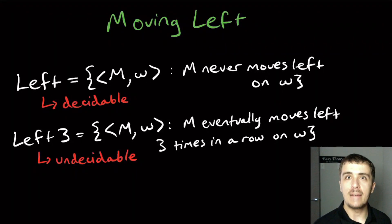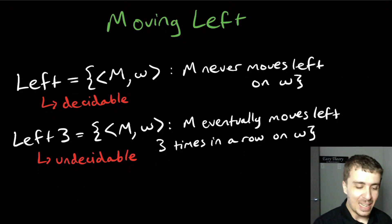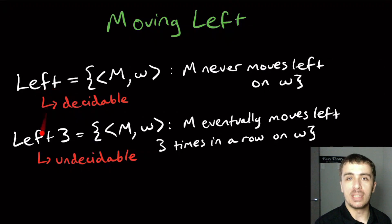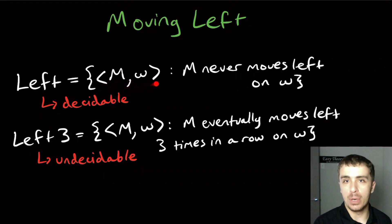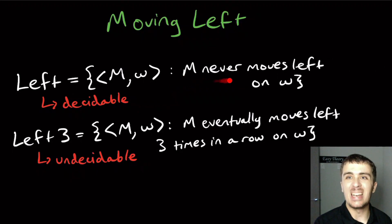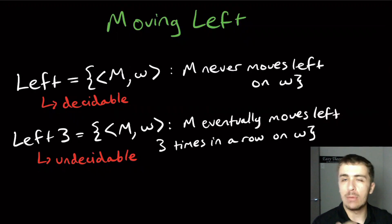Apparently moving left is really hard. Here we have two different languages: LEFT and LEFT3. LEFT is the set of Turing machine and input pairs where the Turing machine never moves left on the input string W — it only moves right.